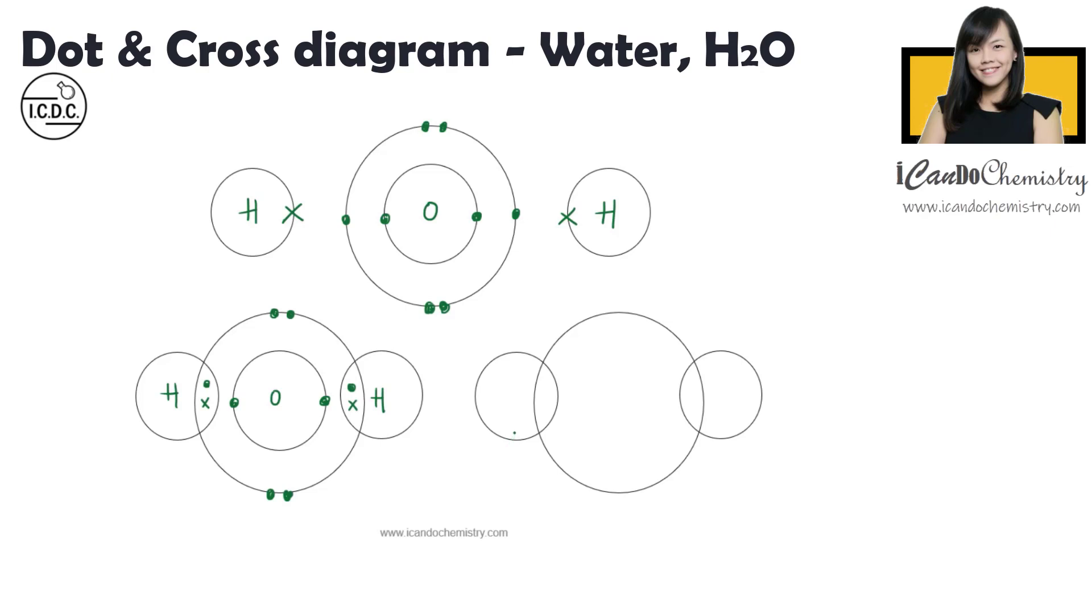Now if the question asks for only the outermost electrons, then what you can do is omit the inner shell and show only the outermost electrons, right? So this is what you can draw.